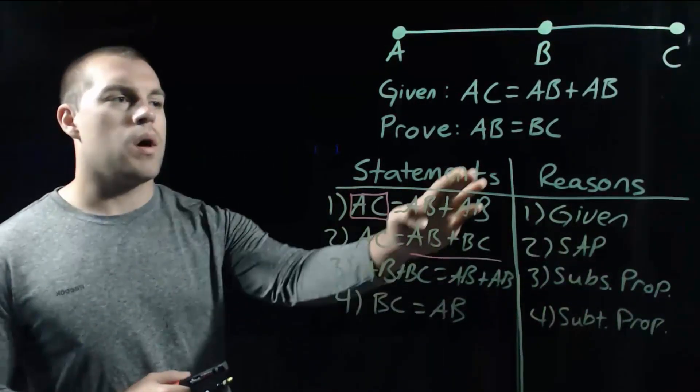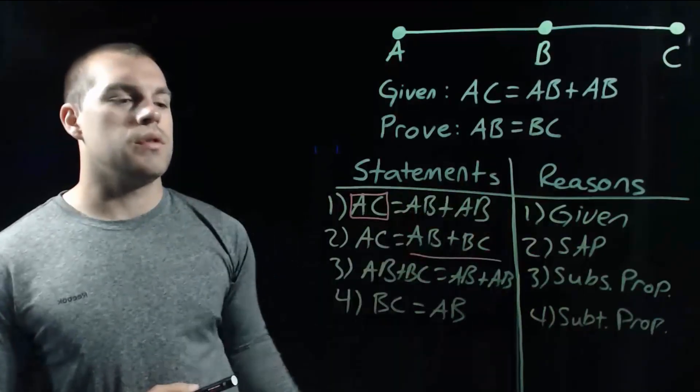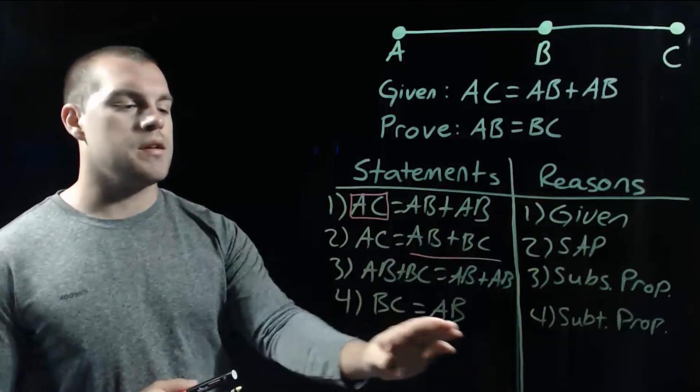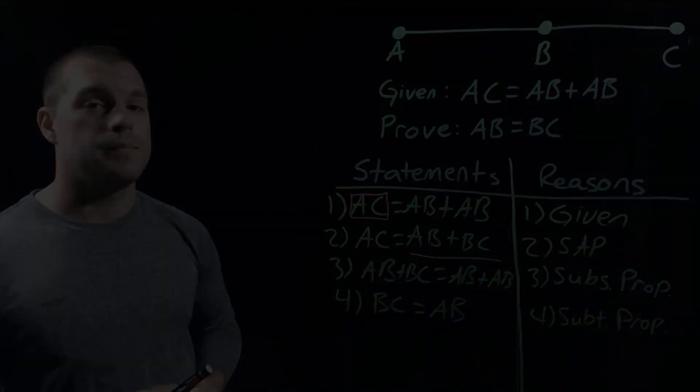And then we're done. We wanted to show that the length of AB was equal to the length of BC, and that's what our last statement says. So we're all done with this proof.